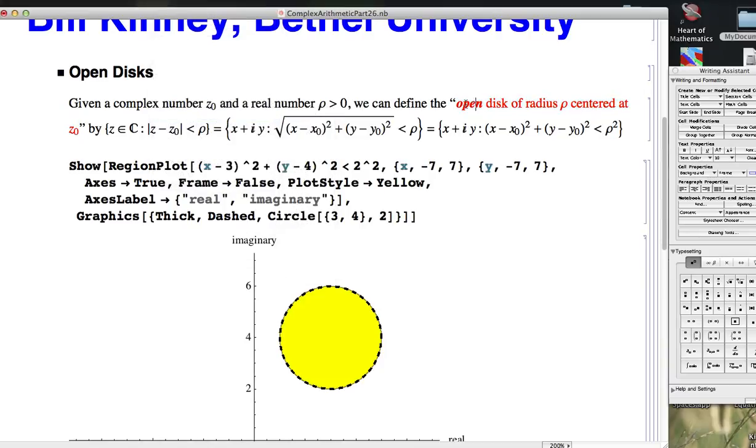What does it mean for a set to be an open disk? Here I'm spelling disk with a k, but if you prefer a c, that's fine as well. What does it mean to be an open disk of radius ρ centered at the point? That would be all points within a distance of ρ of that given point, strictly less than ρ, not equal to it to technically be an open disk.